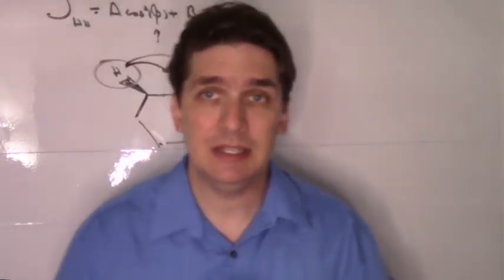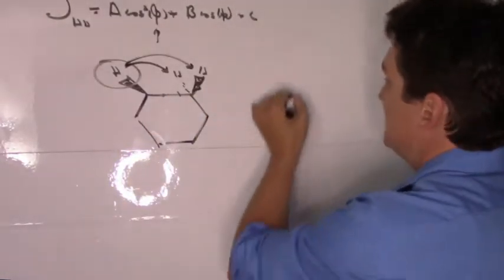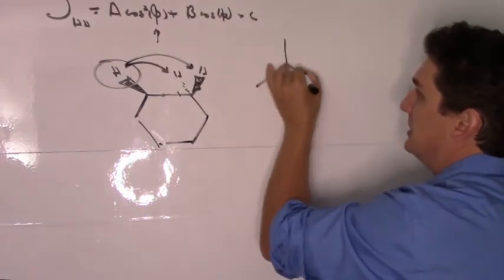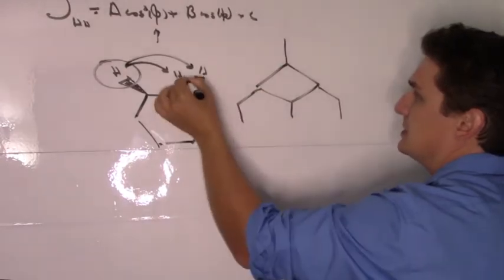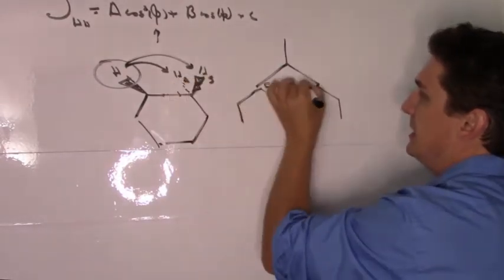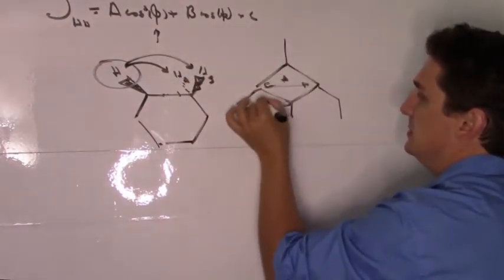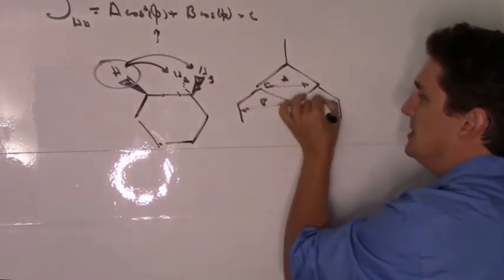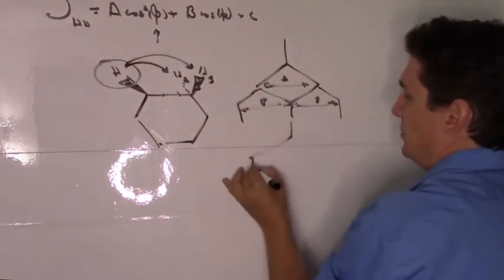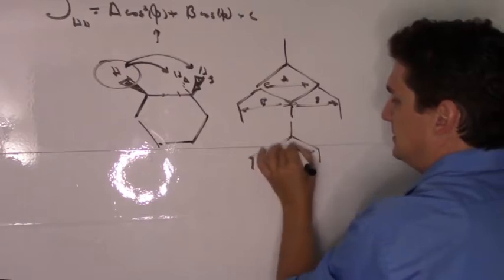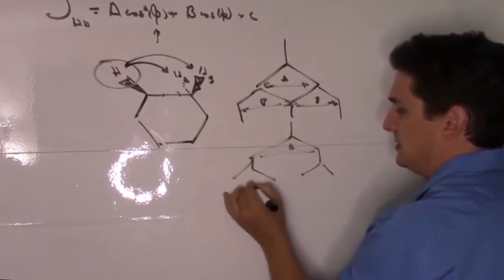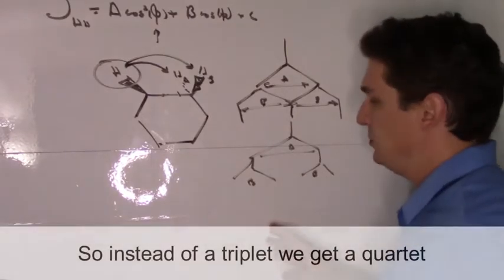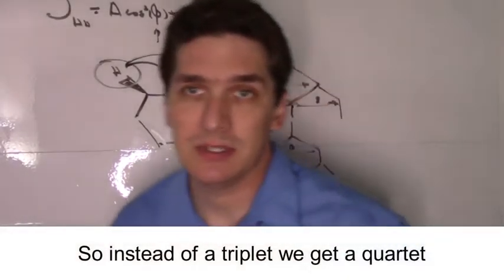We will end up getting coupling, and instead of seeing the expected tree diagram where one split breaks into two splits—let's call this hydrogen A and hydrogen B—we'll actually get one split from A and different splits from B. We end up with basically a quartet.